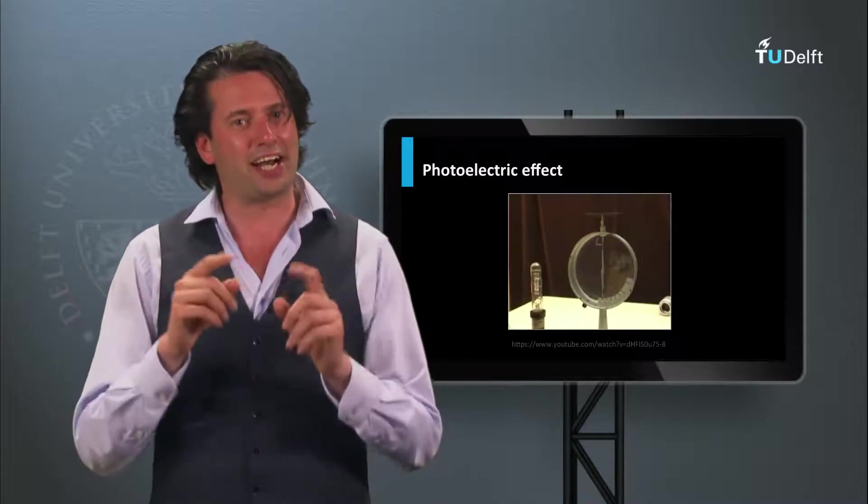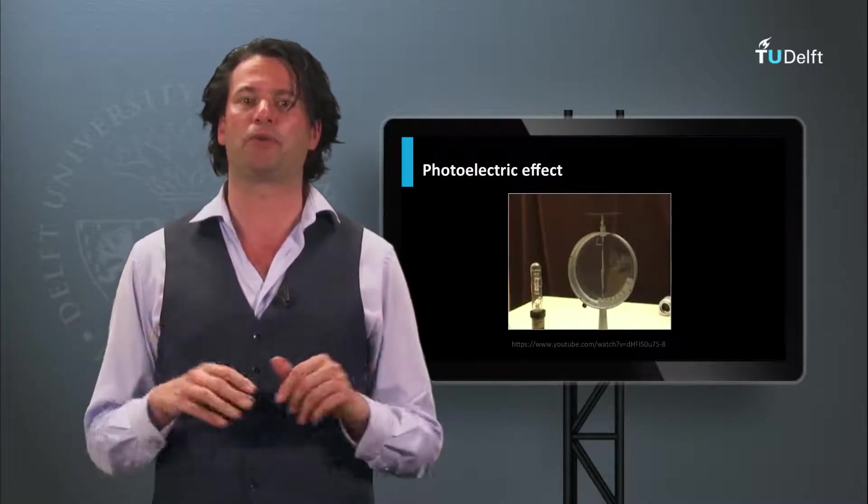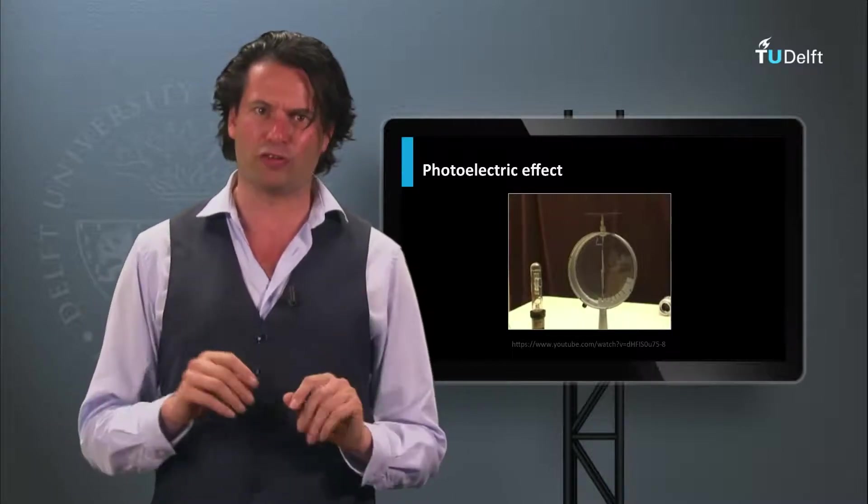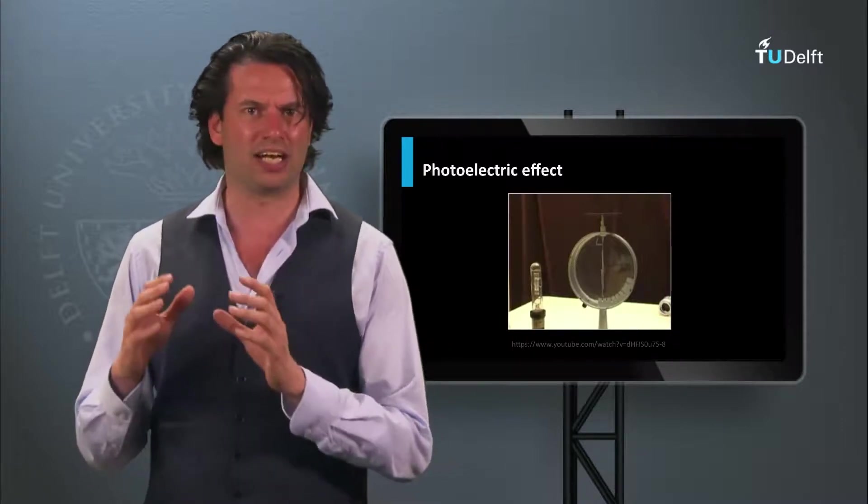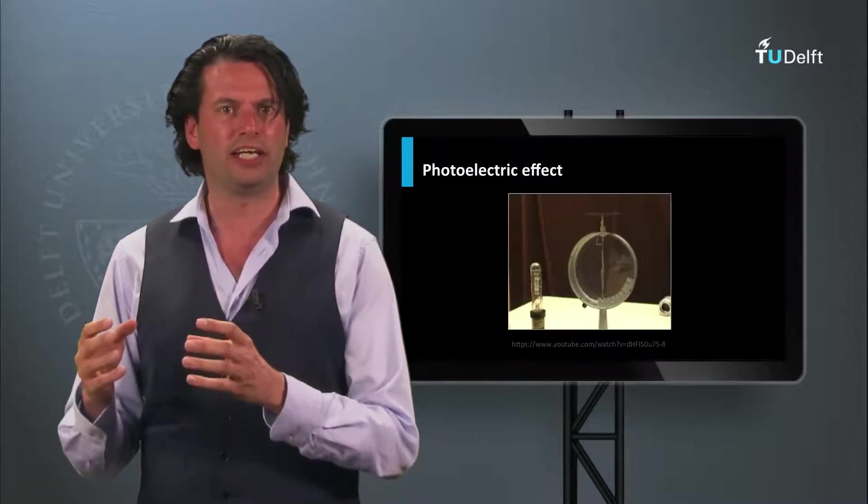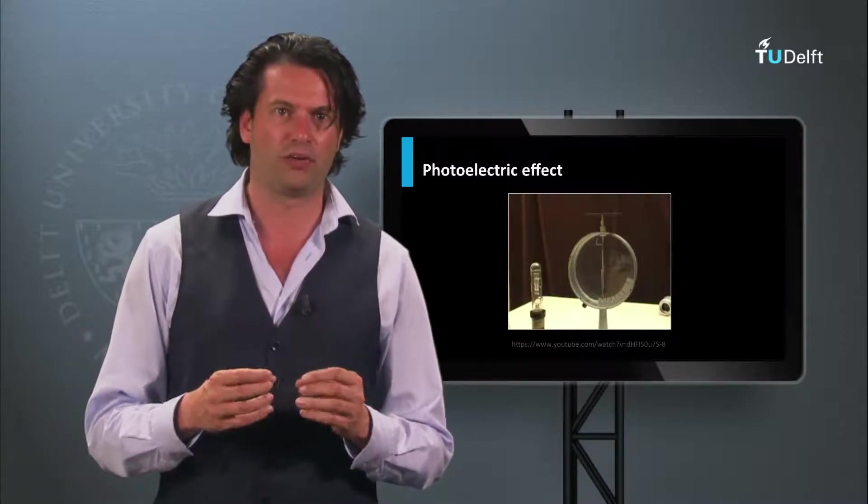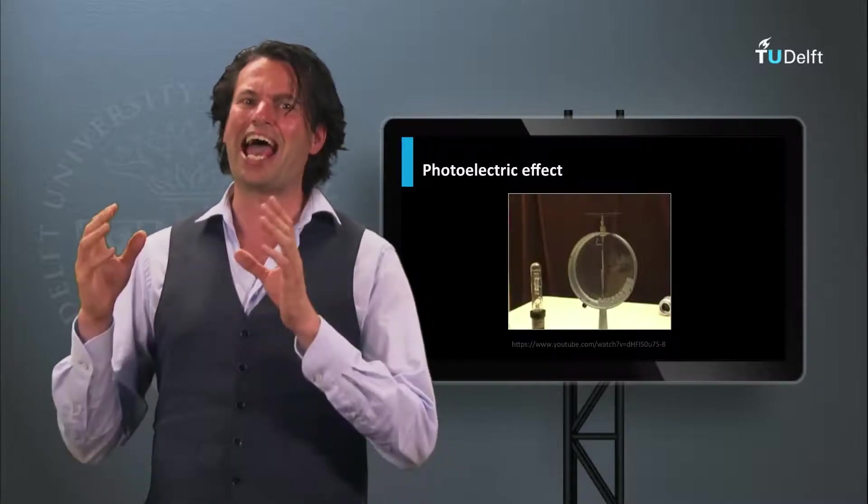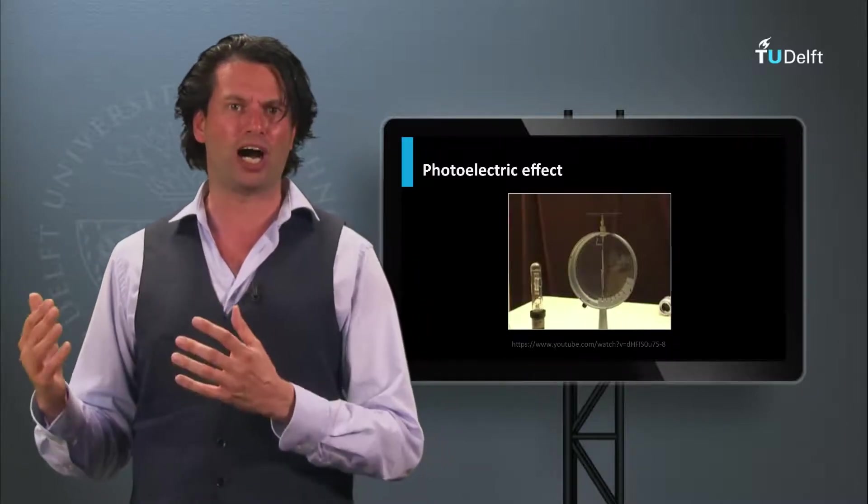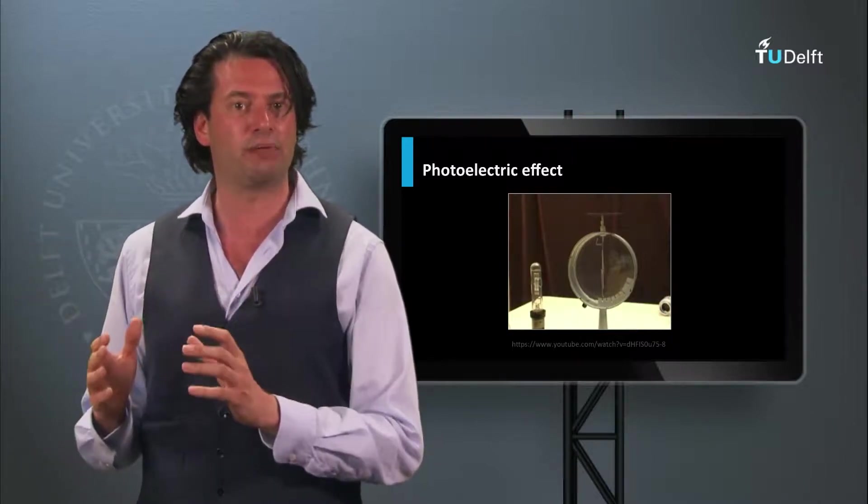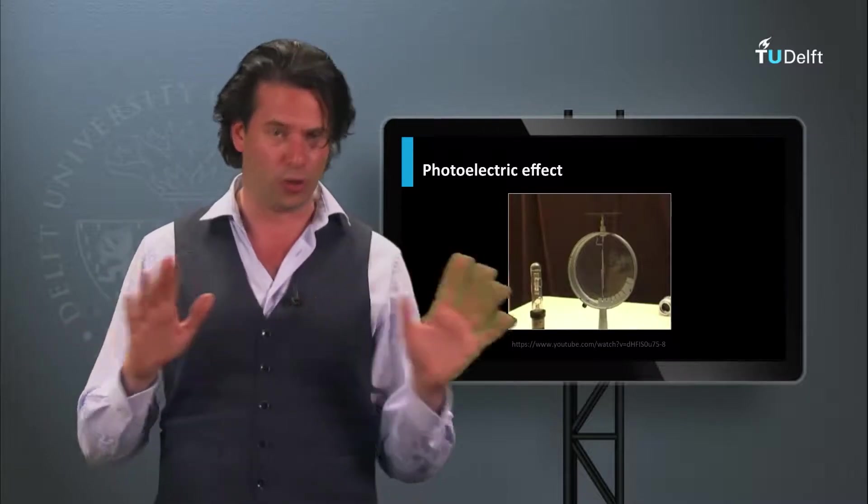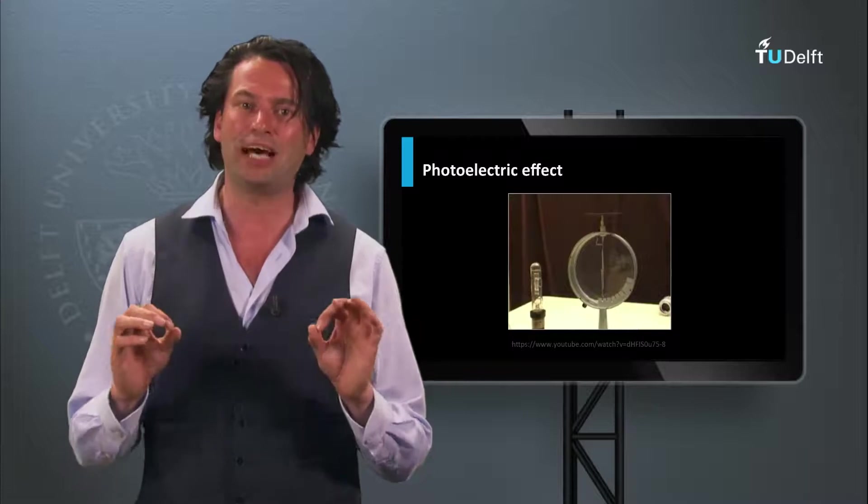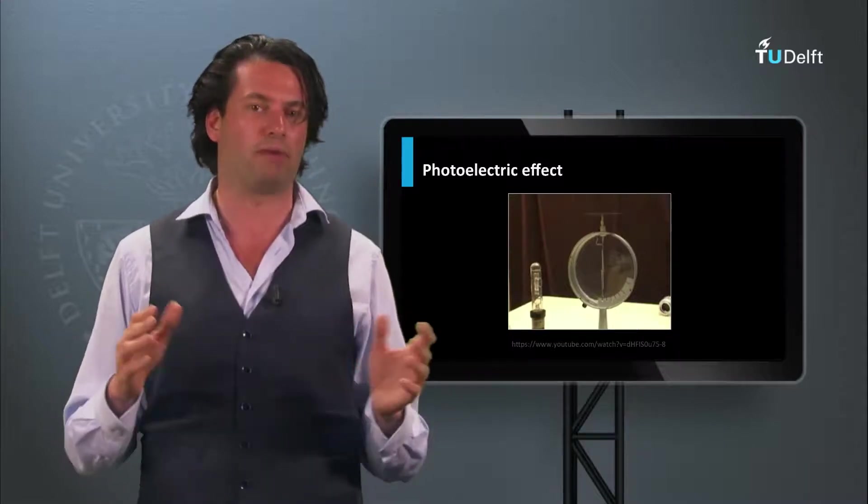It was Einstein who explained this experiment in his famous paper from 1905. He proposed that light consists of quantized energy packages, which we nowadays call photons. To eject an electron out of the material it requires a certain threshold energy. The photoelectric effect shows that when the energy of the photons are above this threshold, the charge can be ejected from the material. If the energy is below this threshold, no electrons are ejected. This demonstrates that light can be described by photons.